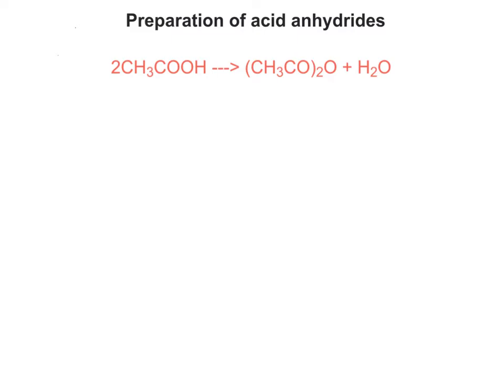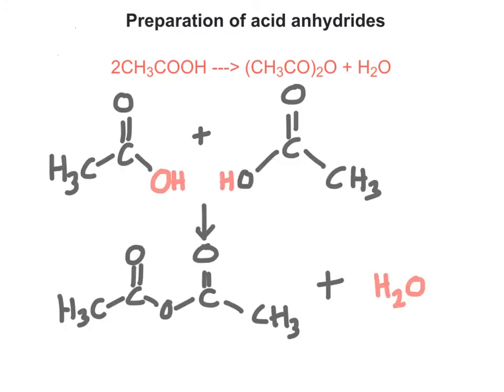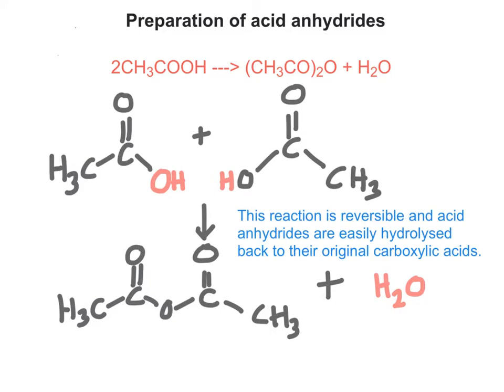To prepare an acid anhydride, all you need to do is dehydrate two molecules of carboxylic acid. Looking at ethanoic acid making ethanoic anhydride, you can see clearly from the displayed formulae where the water comes from. This reaction can also be reversed — if you add water to an acid anhydride, you hydrolyse it and split it back into the two parent carboxylic acid molecules. It's actually quite a vigorous reaction, but not quite as vigorous as the reaction between water and an acyl chloride.